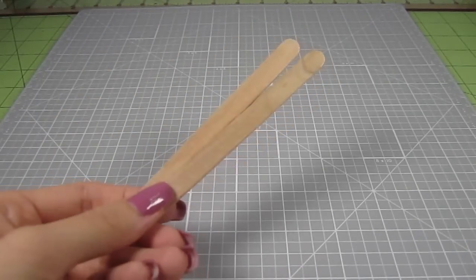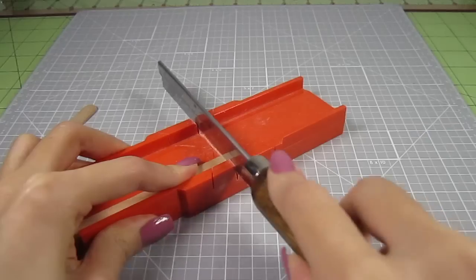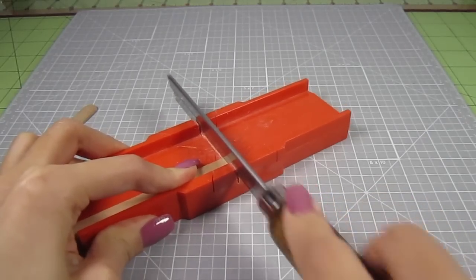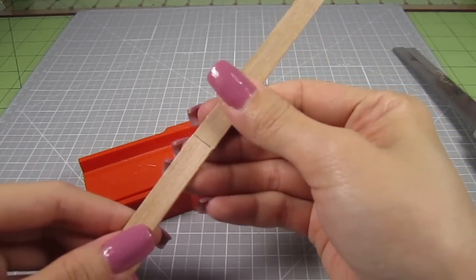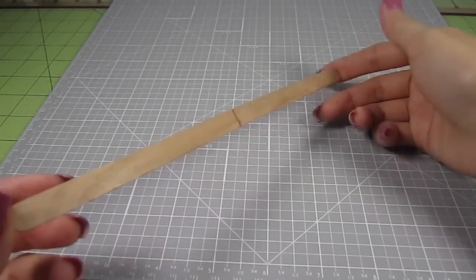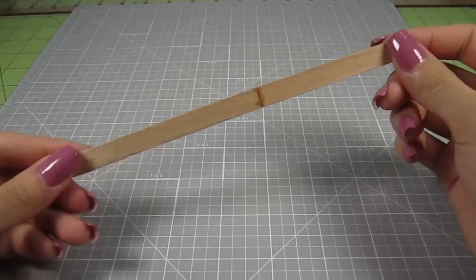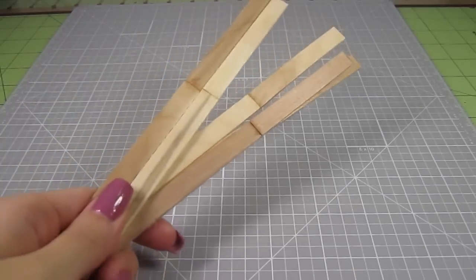Next, take 2 popsicle sticks. We're going to be combining these 2 to make a longer stick. Cut off a round end on each stick. Then glue those flat ends together. Once that's dry, cut out a length of 6 and 3 fourths inches. This is what you want. Make 5 of these.